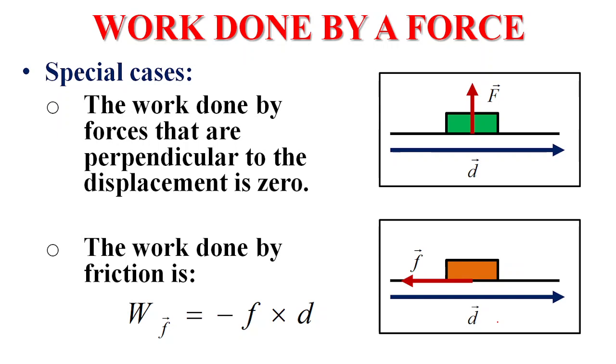When the force and the displacement are parallel and having the same direction, W equals F times D. If the force is perpendicular to the displacement, the work done by this force is zero. Perpendicular forces do no work. For example, if this object is moving on this horizontal plane by means of a given force, the work done by N and W is zero.